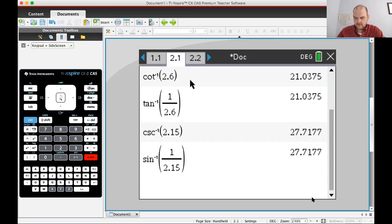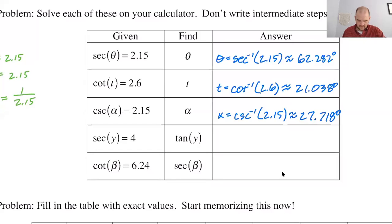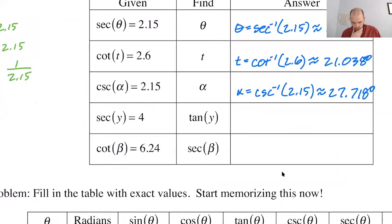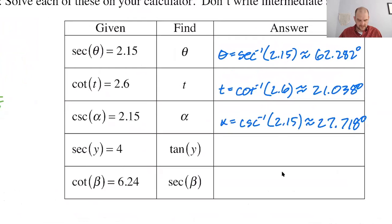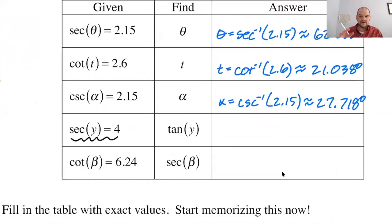So the next problem is a little more complicated. Not a lot more complicated, but a little more complicated. All right. Secant of y is equal to 4. But I want to find the tangent of y. So the secant is 4. I want the tangent. Well, what does y equal? Think about the problems that we did here, right? Secant of theta is 2.15. Theta is the inverse secant of 2.15. So here I have secant of y is equal to 4. So that means that y is equal to the inverse secant of 4. And then I'm trying to find the tangent of that.